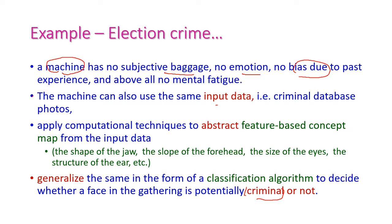What the machine will actually do? First, it will use the input data, input data means the criminal database photos. After that, the criminal photo will be compared with the criminal database photos by using the abstraction technique. Abstraction means the feature based concept map from the input data. Which are the features here we are using? The shape of jaw and the slope of forehead, size of eyes, and the structure of ears. These are called as the abstract.